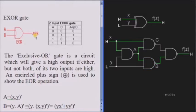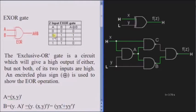The XOR symbol is denoted with a plus sign inside a circle. This is the truth table for the XOR gate. If both inputs are 0 or both are 1, then the output is 0; otherwise the output is 1 — that is, if any one input is 1 and the other is 0, then the output is 1.